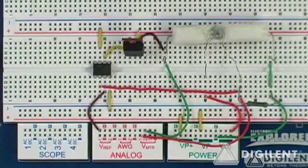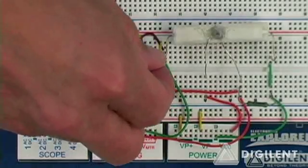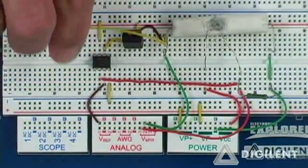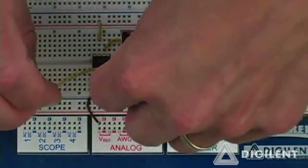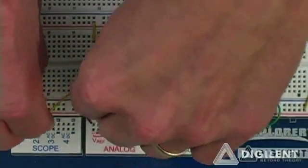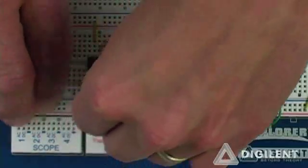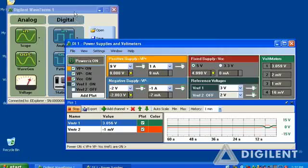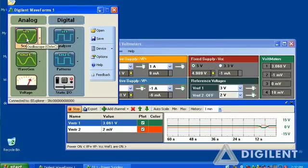So what I'm going to do is run a jumper from the positive terminal of the resistor over to the DC coupled channel 1 of the oscilloscope. Now if I go back to my main menu and click on the scope icon, a window will open up.